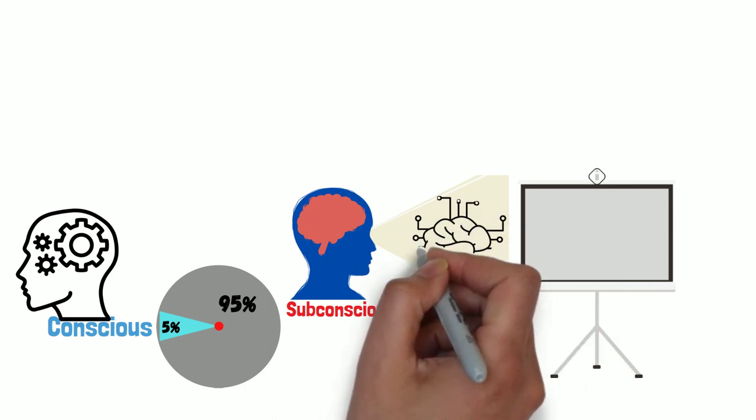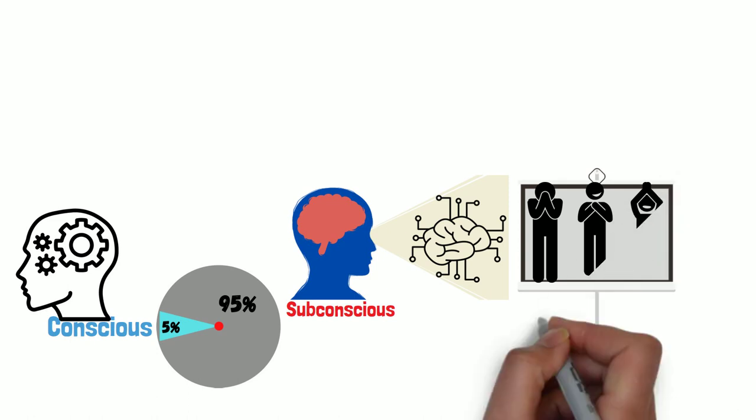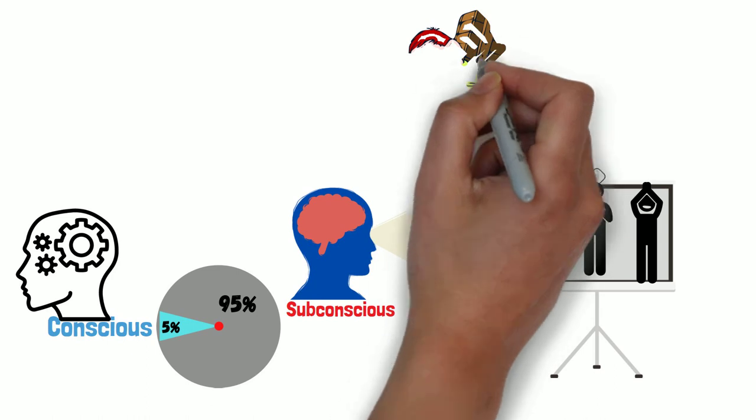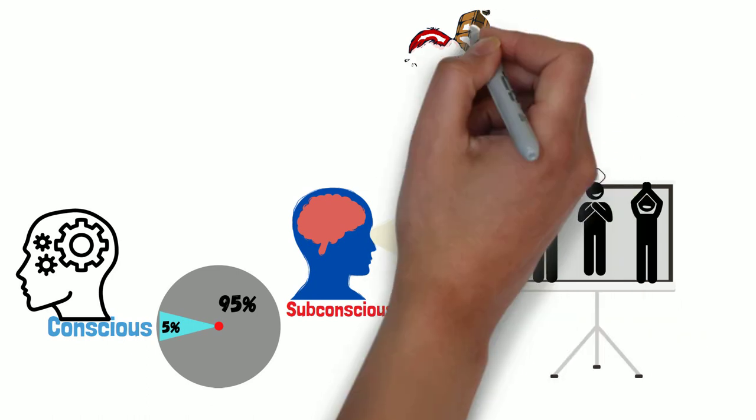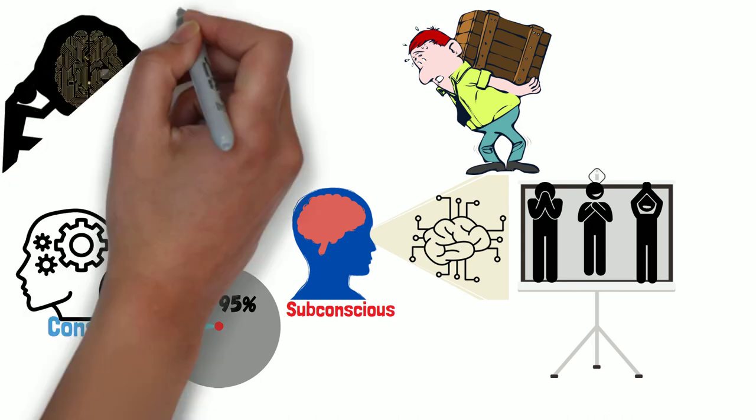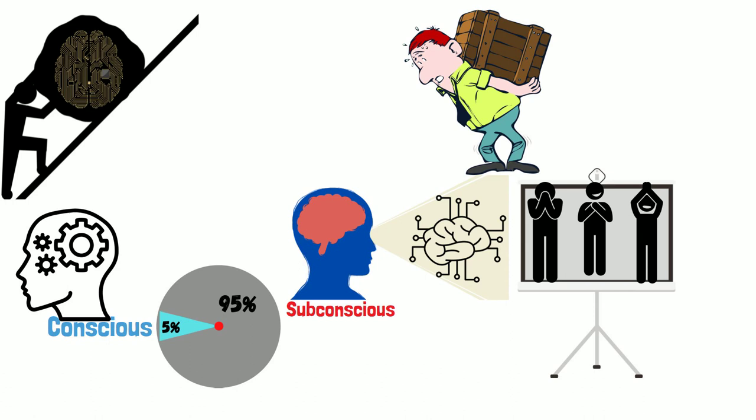The things that work for you and that come to you, the things that you want come to you because you have programs in the subconscious that encourage their being there. But anything you struggle with, anything you have to work hard at, anything you put an effort into, you're doing that because you're trying to overcome a program of limitation that is preventing you from going there.